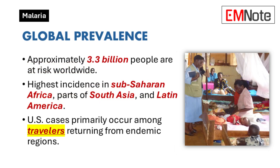Global Prevalence: Approximately 3.3 billion people are at risk of contracting malaria worldwide, with the highest incidence in sub-Saharan Africa, parts of South Asia, and Latin America. In the United States, malaria cases primarily occur among travelers returning from endemic regions.